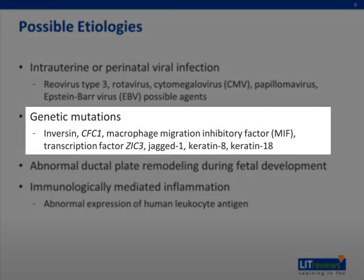Though the disease is not an inherited disorder, several genetic mutations have been identified as possible etiologies. Transgenic mice with a recessive deletion of the inversin gene have situs inversus and an interrupted extrahepatic biliary tree. Mutations of the CFC1 gene, which is involved in left-right axis determination in humans, have recently been identified in a few patients with syndromic biliary atresia. Other genes having a possible role include macrophage migration inhibitory factor, transcription factor ZIC3, jagged 1, keratin 8, and keratin 18.